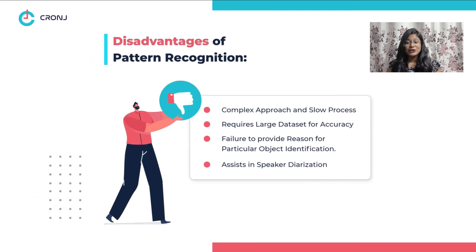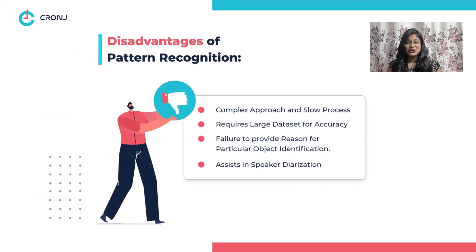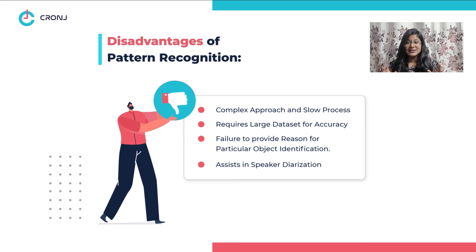Although pattern recognition has a lot of advantages to talk about, it has disadvantages too. Some of them include: firstly, it is a complex approach to implement and it is a slow process. Secondly, it requires a large data set to receive accurate results. Thirdly, it often fails to provide a reason for identifying a particular object, and much more.